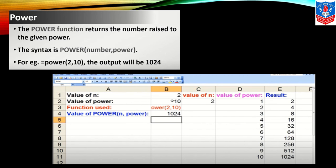Logarithm base 10 returns the value of logarithm base 10 for the given positive number. The syntax is LOG n where n is the positive number. Now power function returns the number raised to the given power. The syntax is POWER number and the power. For example, POWER 2, 10, the output will be 1024. Here it is given.